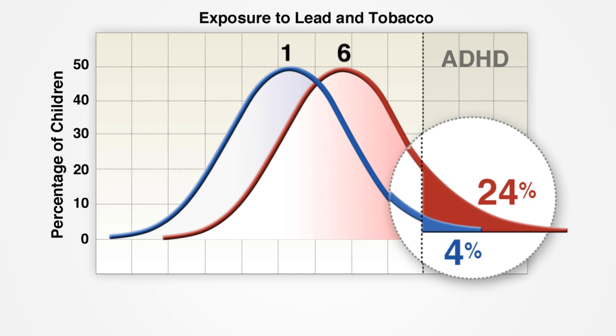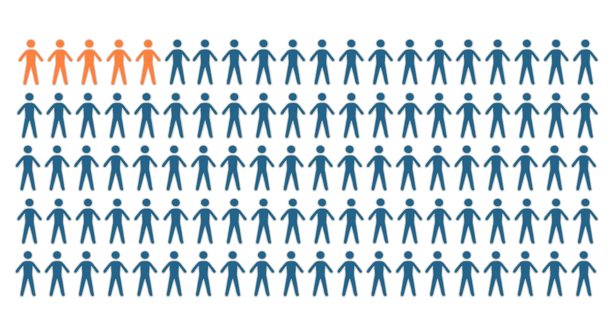whereas 24% of children with both exposures have ADHD. This shift in ADHD symptoms results in a greater than six-fold increase in the percent of children who have ADHD, an increase that is far greater than if you simply added the two risk factors together.